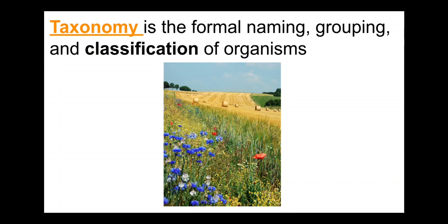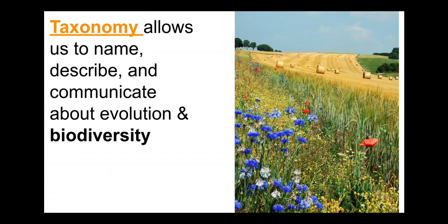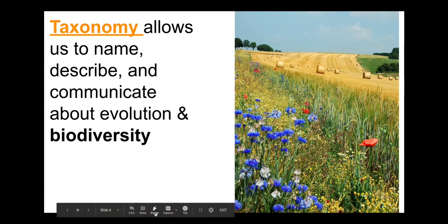It's a discipline that's been around for a long time, and recently — the last 50 years or so — has been increasingly trying to represent evolutionary concepts, to make sure that the way we name things, group things, and classify them reflects our evolutionary understandings. Taxonomy is key for helping us communicate between scientists, understand how evolution has proceeded, make predictions, understand biodiversity, understand how things are related to each other, and understand what happens when ecosystems are altered.